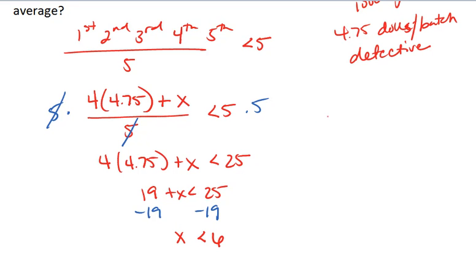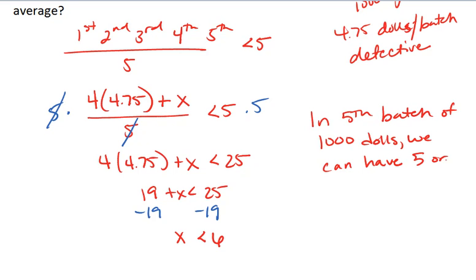So this means that in our fifth batch of 1,000 dolls, we can have 5 or less defective.